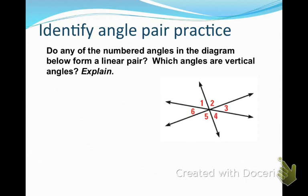Do any of the numbered angles in this diagram form a linear pair? Let's take a look. We're looking for two angles that add up to 180: 3 and 4 do not, 3 and 2 do not, 1 and 2 do not, 1 and 6 do not, 5 and 6 do not, and 5 and 4 do not. Therefore, none of those angles form a linear pair.